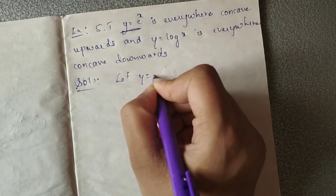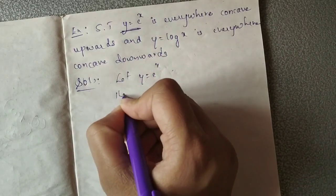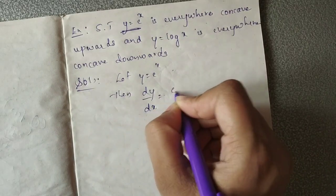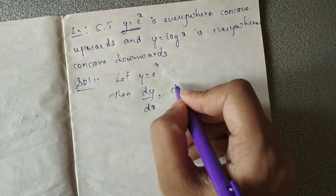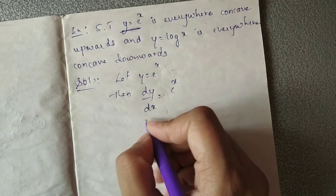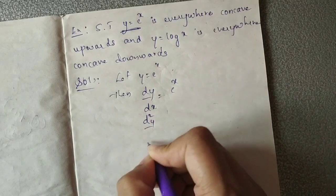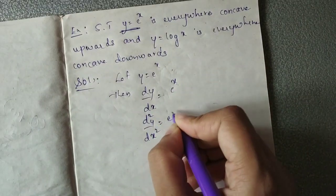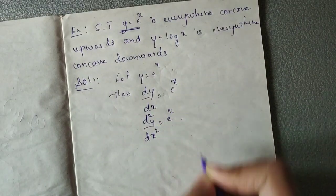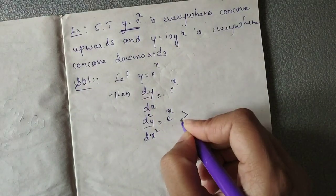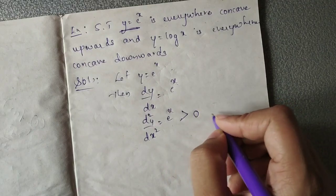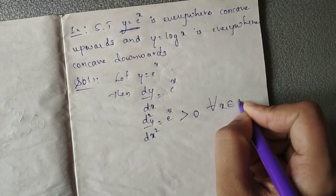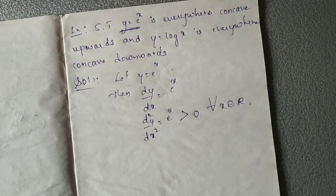Let y equal to e raised to x. Then the derivative dy by dx equals e raised to x. Similarly, the second derivative d squared y by dx squared is also e raised to x. We know that e raised to x is always positive for all x belonging to the set of real numbers.